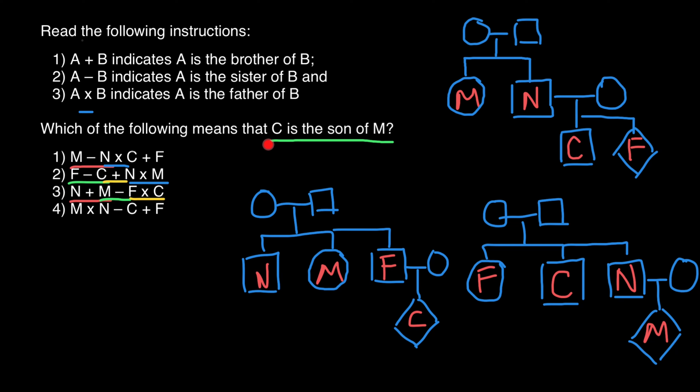We are looking for C to be a son of M. In this pedigree, C is a son of F, and M is going to be an aunt of C. At this point, to save time on the exam, you may choose this as the correct answer, but let's do the fourth pedigree to confirm.